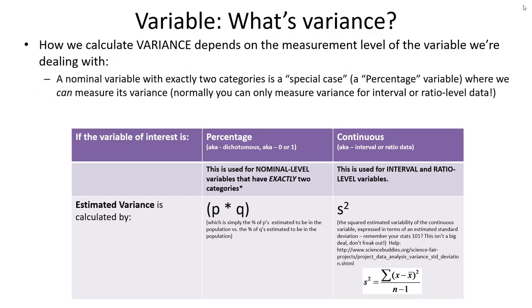More concretely, the way we calculate variance depends on whether we're dealing with a percentage variable — a so-called dichotomous variable where everything is coded into an either-or category, 0 or 1 — or whether we're dealing with a continuous variable, something measured on an interval or ratio level scale.